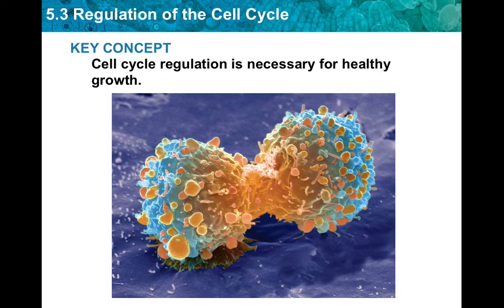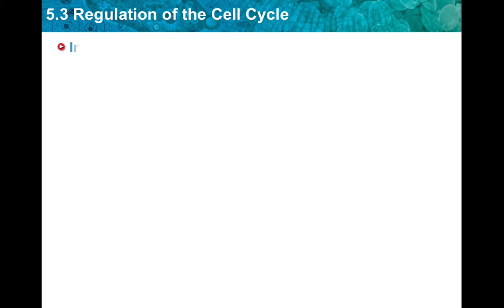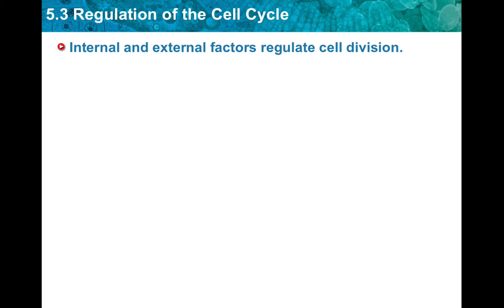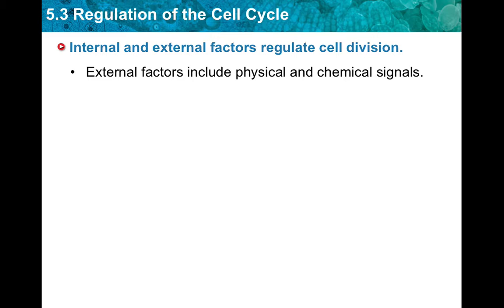Today we're going to learn about the regulation of the cell cycle. Internal and external factors regulate cell division. External factors include physical and chemical signals that happen outside the cells, such as interaction with other cells and parts of the body. An example of an external factor is cell-to-cell contact — once a cell touches another, it cannot divide anymore.